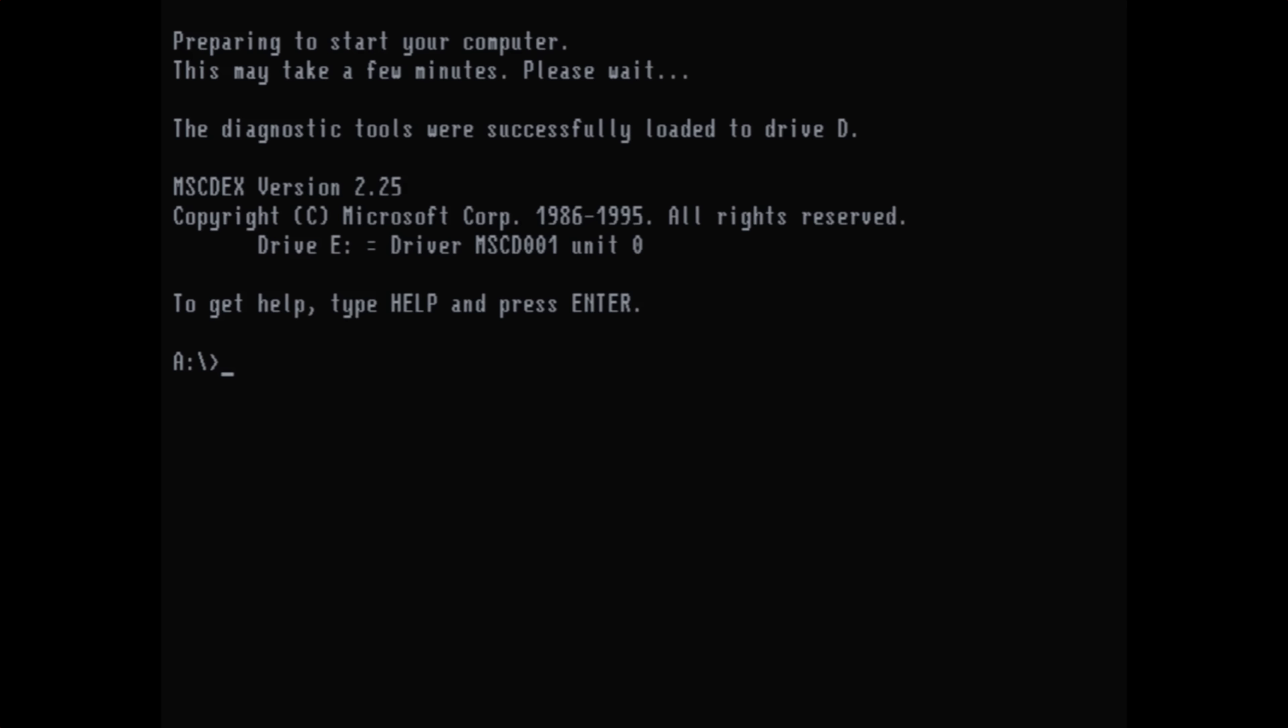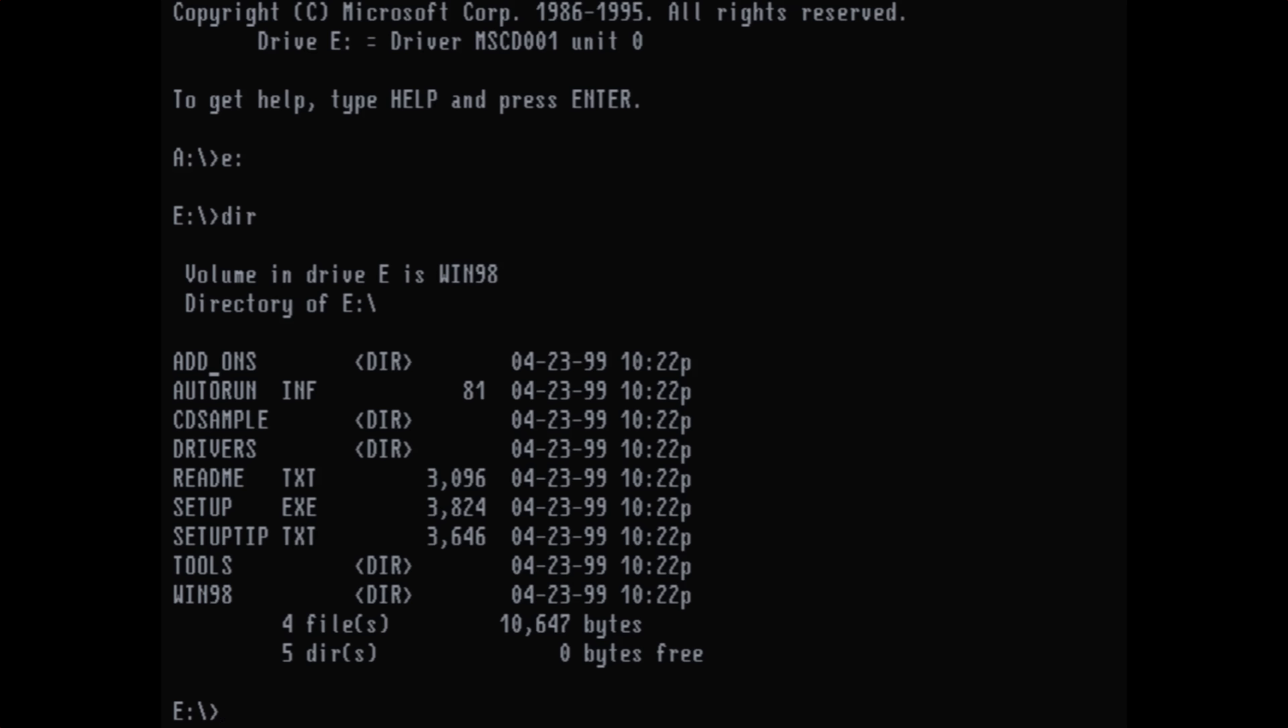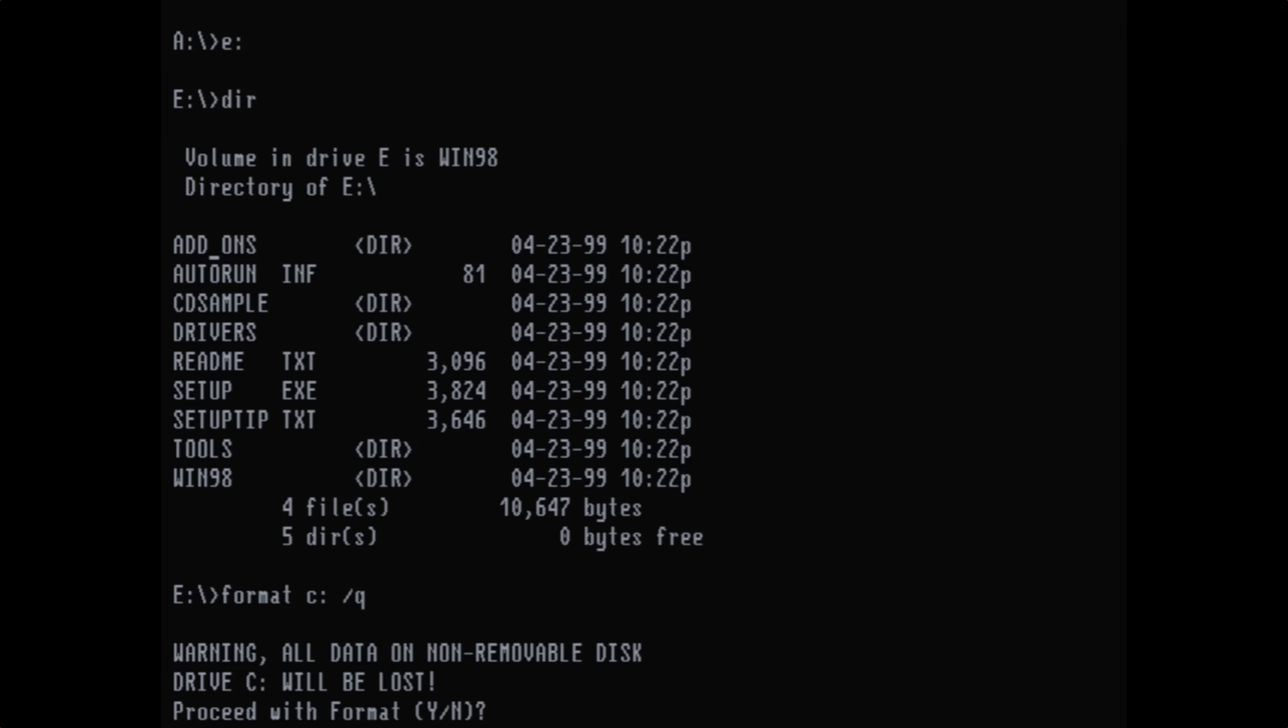All right, now I'm at a command prompt, so it looks like it's assigned the E drive to the CD-ROM. Okay, and in this case, I know that my hard drive is the correct format, but there's stuff already on it, so I'm just going to blank it out, and I will do the format C slash Q command. The slash Q means quick. That'll just make it take a lot less time. Otherwise, we might be sitting here for a little while.